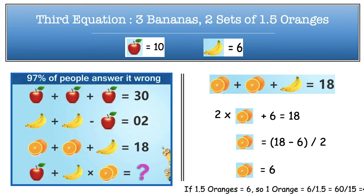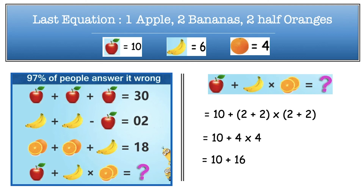By the end of the third equation we have three values: one apple equals 10, three bananas equals 6, and one orange equals 4. Now jumping to our fourth and last equation. It has one apple plus 2 bananas times 2 half oranges. We know one apple equals 10, and since one banana equals 2, two bananas equal 4. Two half oranges equal one orange, which is 4.